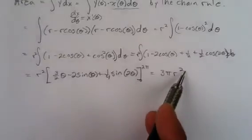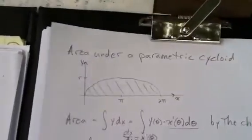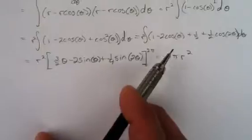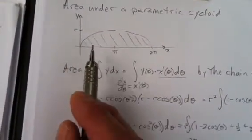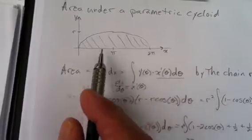I get 3 pi times r squared is the area under the curve. So, if my radius was 1, then the area under my curve would be 3 pi. Distance across the bottom would be 2 pi. Kind of cute, huh?